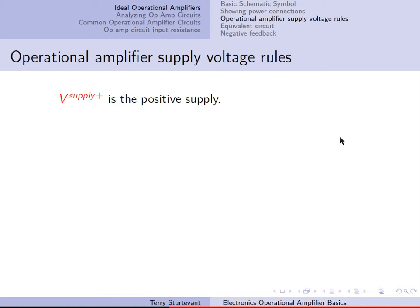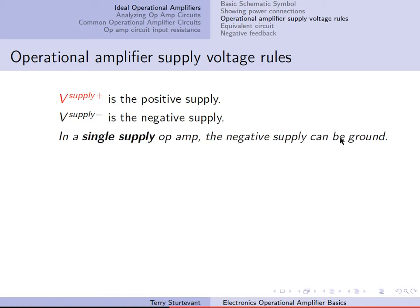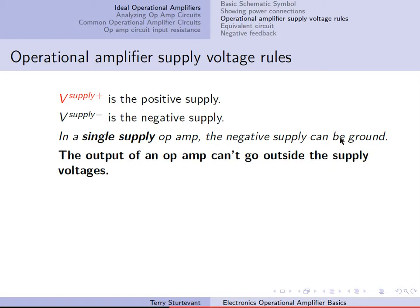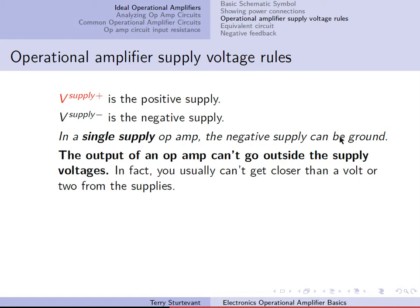The rules about the supply: in a single supply op-amp, the negative supply can be ground. The output of an op-amp can't go outside the supply voltages. In fact, with almost any electronic device, the supply voltages are the limits of what you can get on the output. With an op-amp, you can't usually get closer than a volt or two from each of the supplies. These voltage limits are also called the rails.